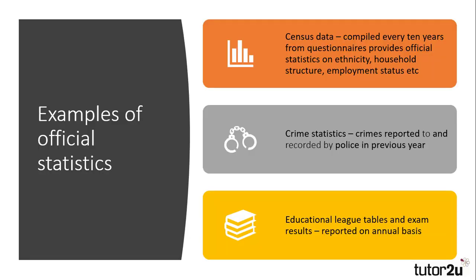Some examples of official statistics: the census provides a lot of official statistics on household structure, beliefs, employment status, and education level. Crime statistics, particularly incidents reported to and recorded by the police, are updated regularly, and we've seen how some social groups are over-represented in those. And educational league tables and exam results, which are published on an annual basis to demonstrate the levels of educational achievement and the quality of education in the UK.